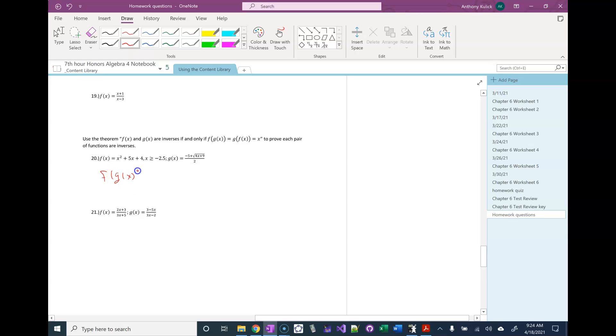So we'll start with f of g of x. What that means is that every place in f of x, I'm going to replace the x's with g of x. So I'm going to have negative 5 plus square root 4x plus 9 over 2 squared plus 5 times negative 5 plus the square root 4x plus 9 over 2 plus 4.